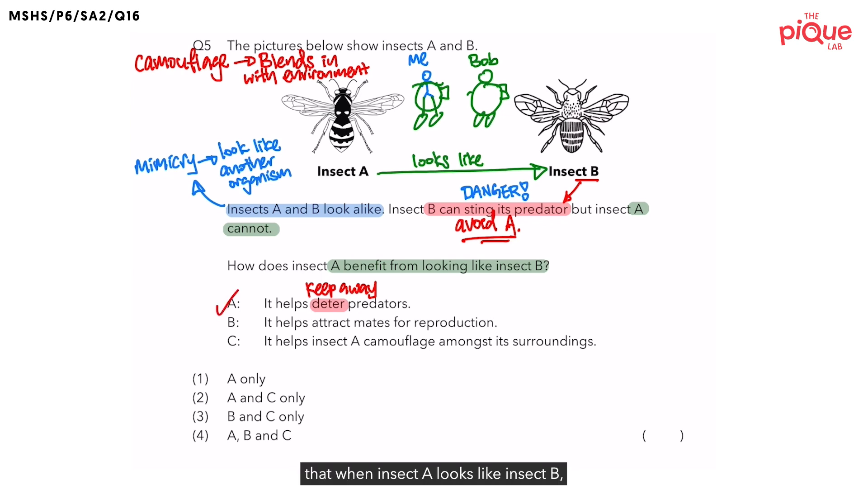Next, statement B says that when Insect A looks like Insect B, it helps attract mates for reproduction. Do you think Insect A wants to look like another organism to attract mates? No! You can think of yourself, right? If I wanted to get a girlfriend, would I dress up like a crocodile to attract girls? Of course not! Not only will I not attract girls to be my girlfriend, but I might also attract crocodiles to come close to me, and they might even end up attacking me. So for Insect A to look like Insect B, do you now think it helps Insect A attract mates? No! We have already discussed that the purpose of an organism looking like another organism is for their predators to avoid feeding on them. So statement B is not a benefit for Insect A.